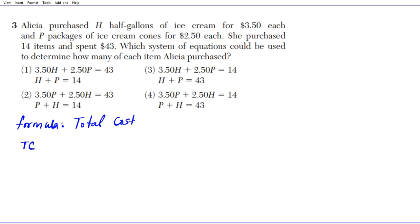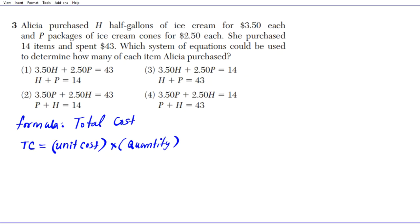To get the total cost of an item, multiply the unit cost by the quantity. We're generating a system of equations, so it's helpful to label them. We have two sets: cost equations and a quantity equation. Let's start with the cost equations.